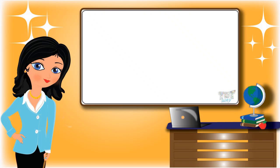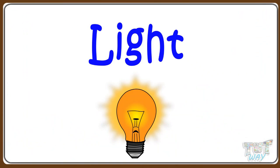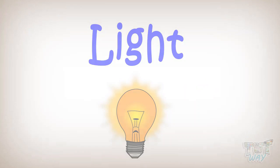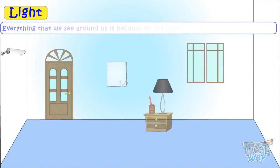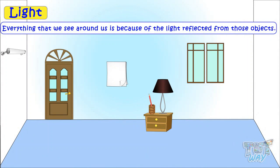Hi kids! Today we will learn more about light or light energy. So let's start. First and foremost thing we need to know is that everything that we see around us is because of light reflected from those objects.